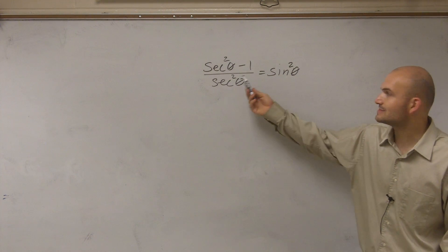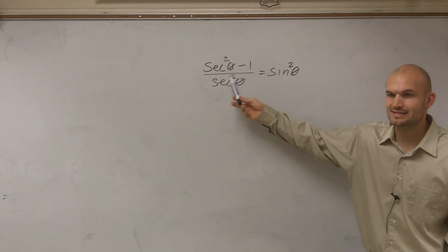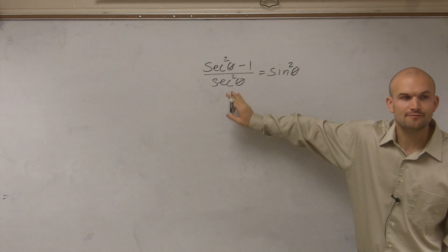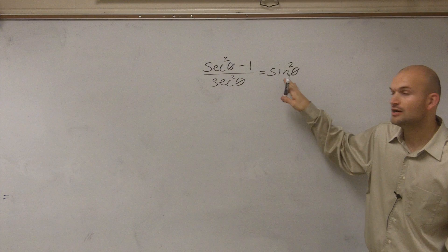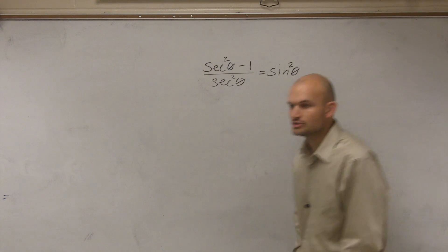So by looking at these two sides, you can say, all right, well obviously this is a lot more complicated than this side. So let's work on, see if we can simplify this left side so then it would be equal to sine squared.